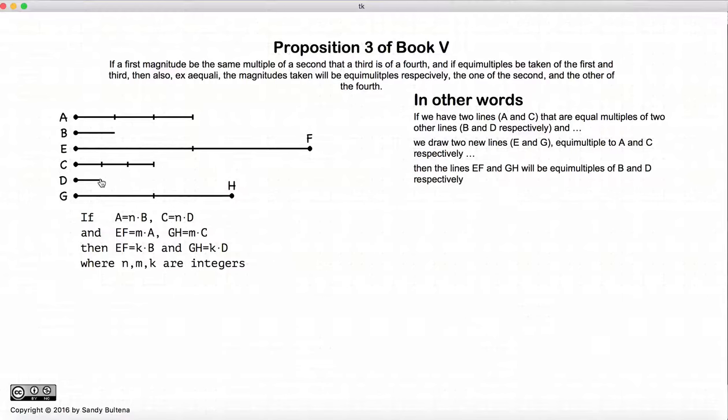So again, to restate this because there's a lot of lines going on here. A is a multiple of B, EF is a multiple of A. Similarly, C is a multiple of D and GH is a multiple of C. A and C are equal multiples of the smaller lines. And EF and GH are equal multiples of the larger lines. Then these two larger lines are going to also be equal multiples of the very tiny lines.